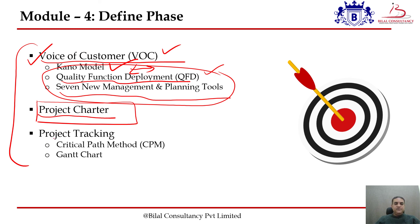Lastly, we have project tracking — to identify how long it would take to complete this particular project. For that, we will learn some tools such as the Critical Path Method or the Gantt chart. I hope you got the idea of what kind of topics we are going to study in this Define phase. See you in the next video.